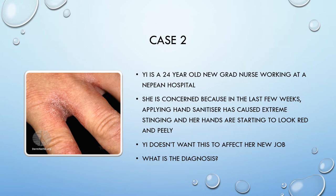Moving on to case two. Yi is a 24-year-old new grad nurse working at Nepean Hospital. She's concerned because in the last few weeks since she started working, applying hand sanitizer has caused extreme stinging and her hands are starting to look red and they're peeling. Yi doesn't want this to affect her new job. If you said contact irritant dermatitis, good job. Some of the features that make you consider this are that Yi is a nurse who will be washing her hands a lot and using chemicals she maybe hasn't used before, and from the picture you can see the rash is distributed on the hands where contact with these chemicals occurs.